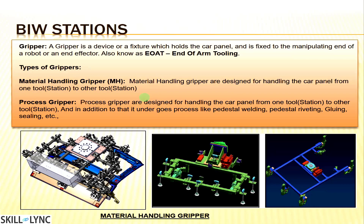In a process gripper, the gripper picks a panel or assembly from station A, goes to a pedestal stand — a fixed stand where a welding gun, gluing gun, or riveting gun is mounted — orients the assembly in the specified direction, and the spotting or gluing is done on that assembly. It then drops the assembly to station B for further processes.